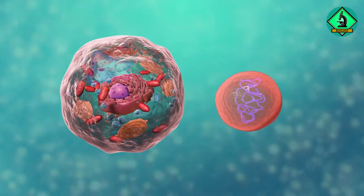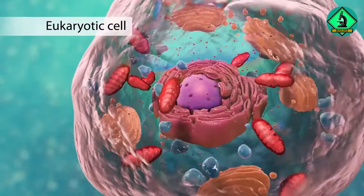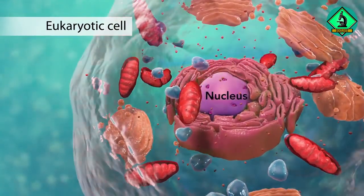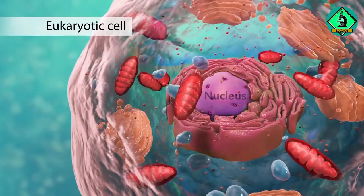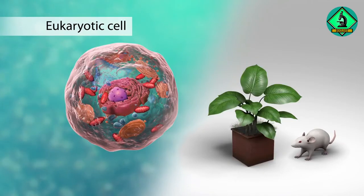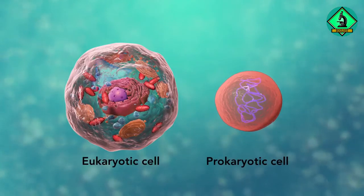The first category is eukaryotic cells. They have organelles which include the nucleus and other special parts. Eukaryotic cells are more advanced complex cells such as those found in plants and animals.